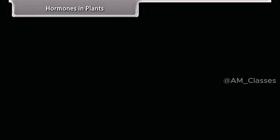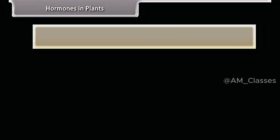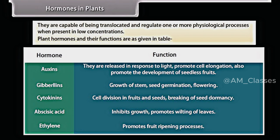Plant hormones or phytohormones are chemical substances produced naturally by plants. They are capable of being translocated and regulate one or more physiological processes when present in low concentrations. Plant hormones and their functions are as given in the table.